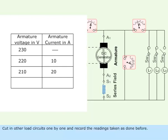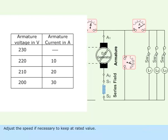Cut in other load circuits one by one and record the readings taken as shown before. Adjust the speed if necessary to keep at rated value.